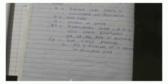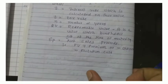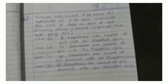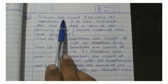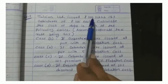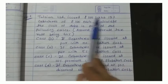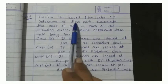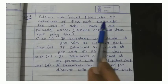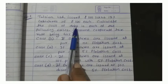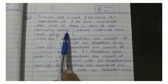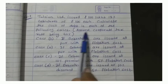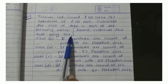Today in this video, we will discuss the calculation of sums. I have a question: Tulsian Limited issued 12% debentures of Rs. 100 each. Calculate the cost of debt in each of the following cases, assuming corporate tax rate is 40%.